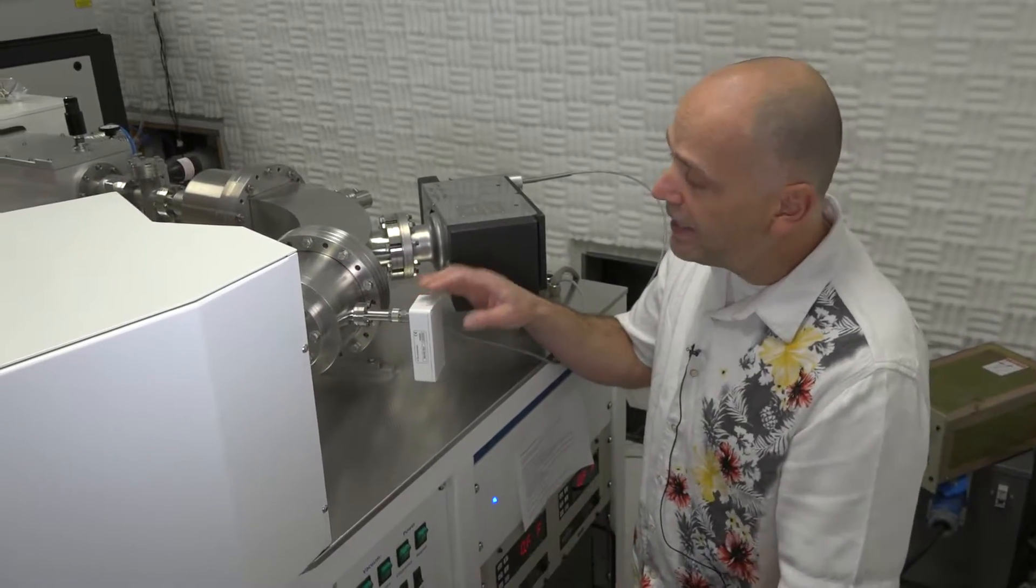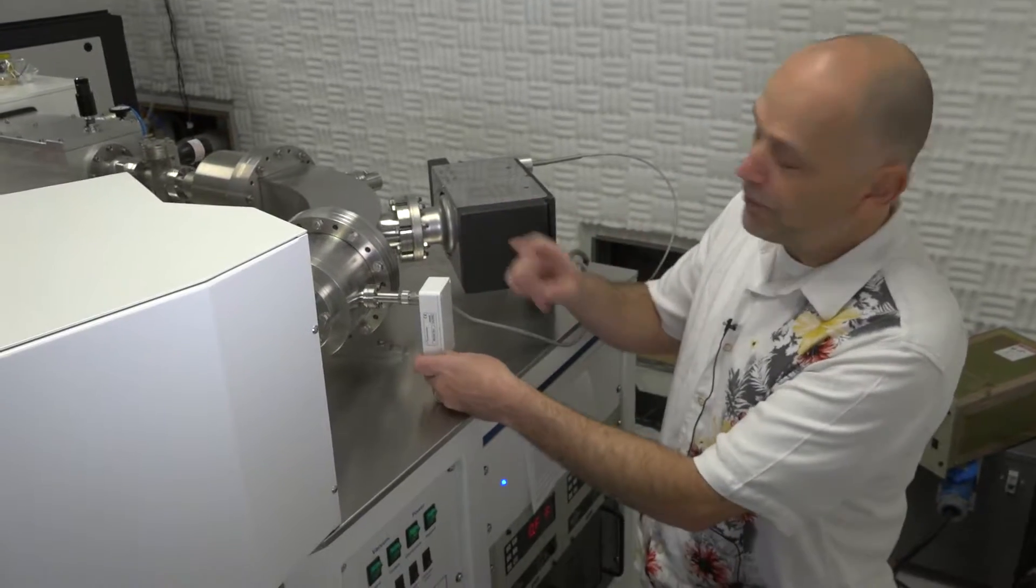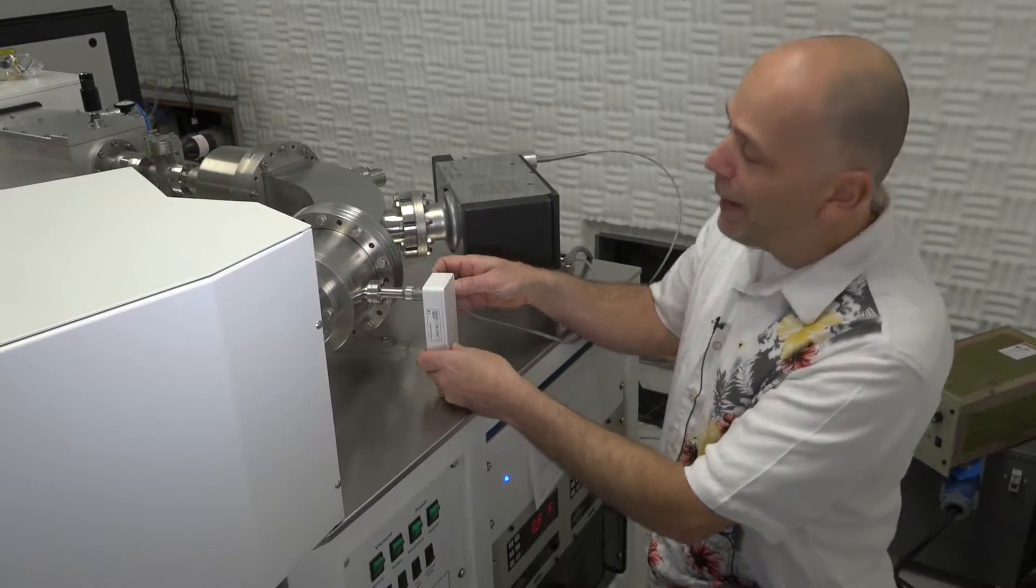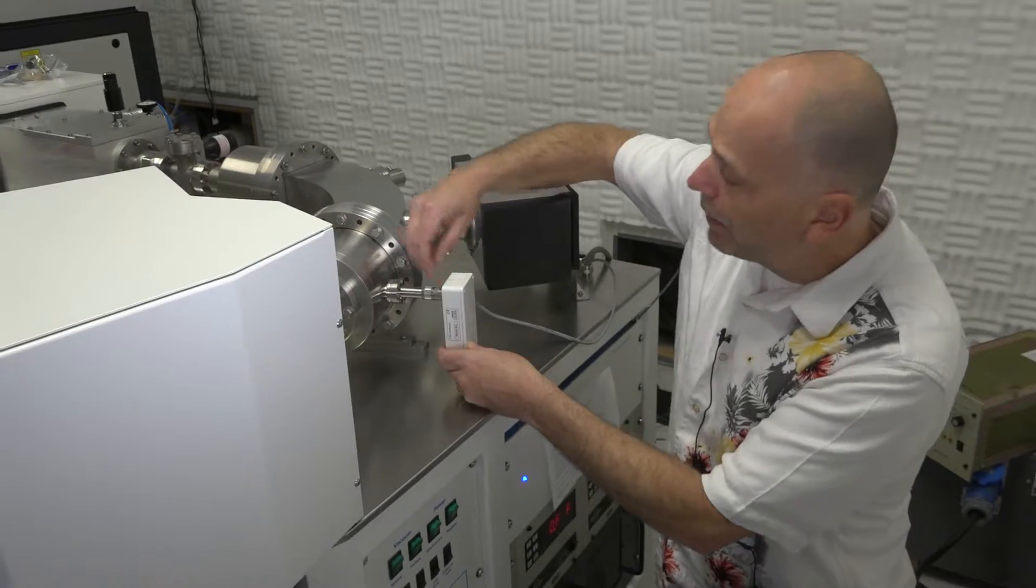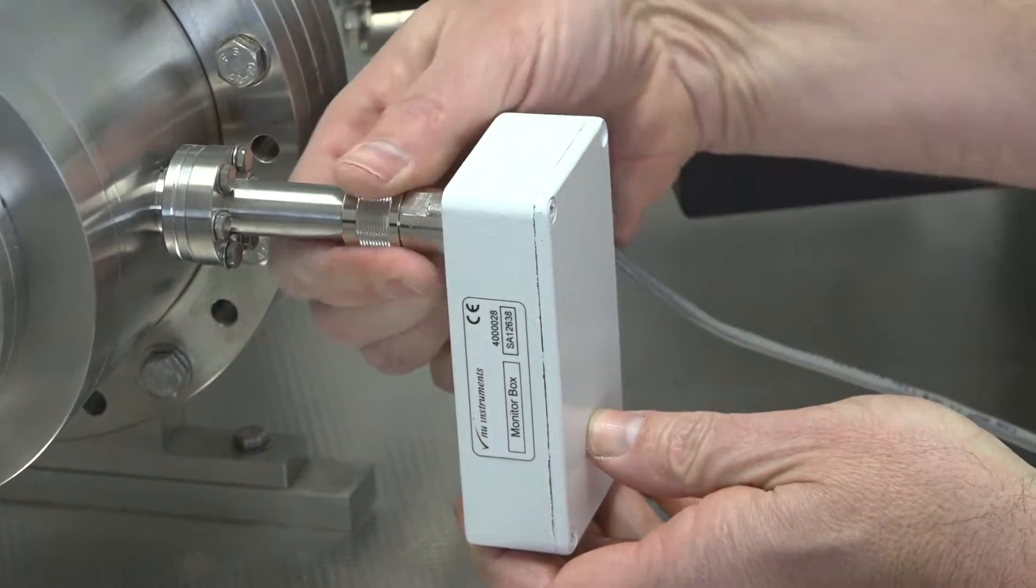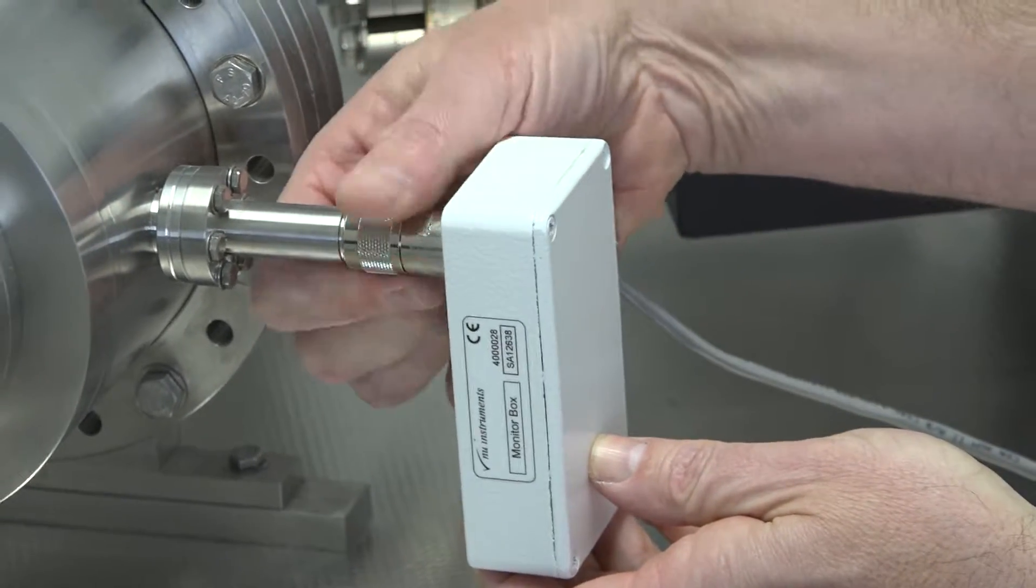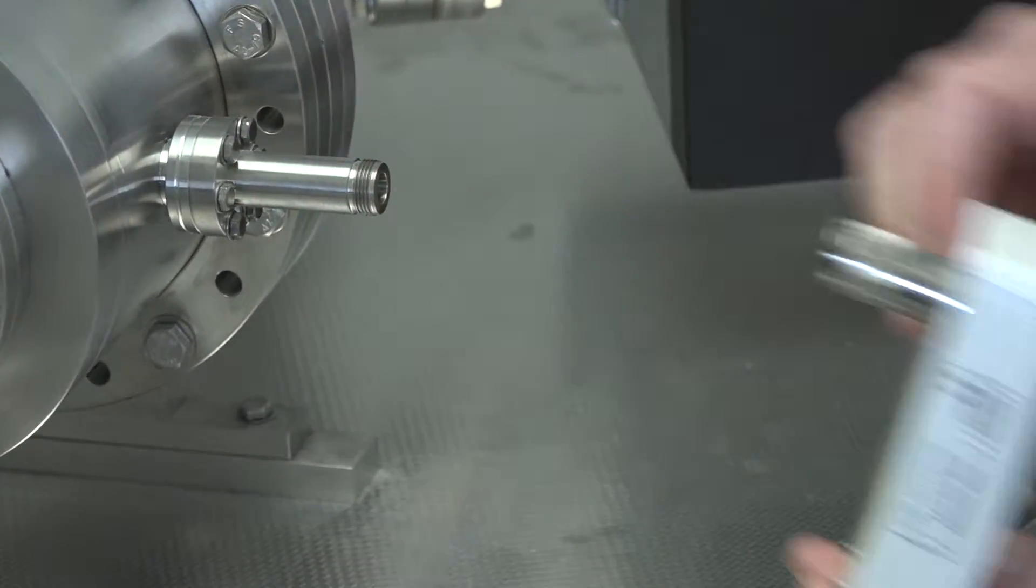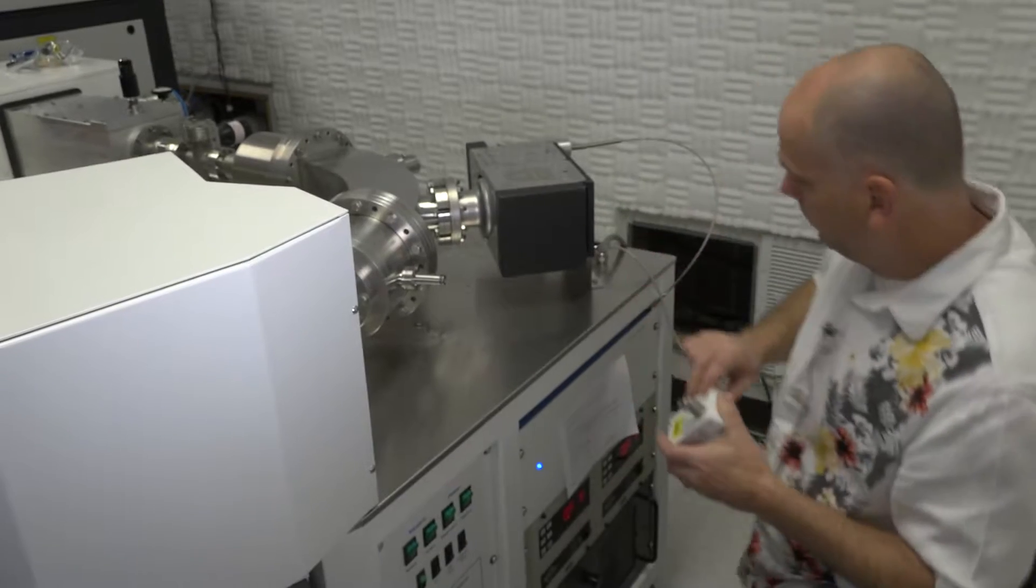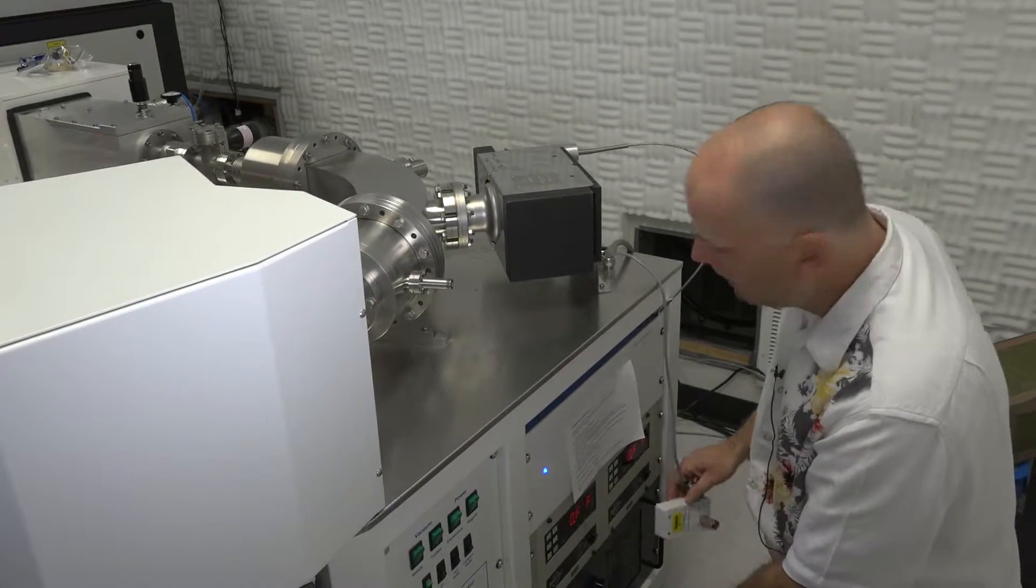The monitor box on the ESA needs to be removed. It's not sufficient to remove just the cable on the back. You actually have to remove the entire monitor box, unscrewing it in this manner. Pull it straight out and it comes right off. Just lay that along that side of the instrument.